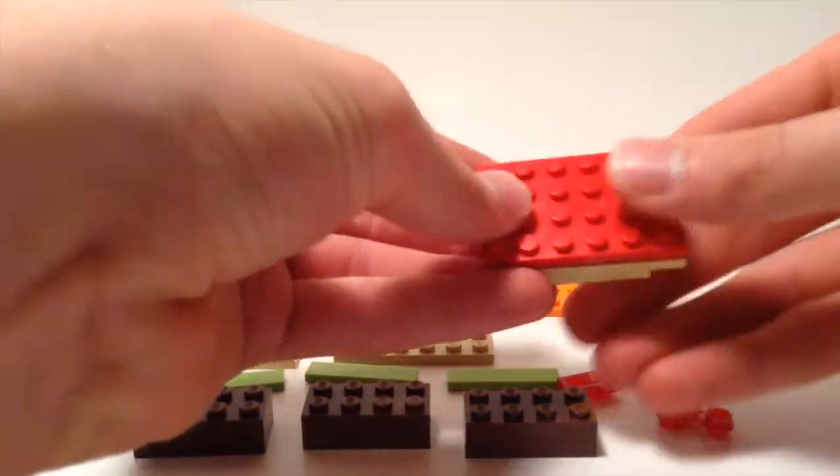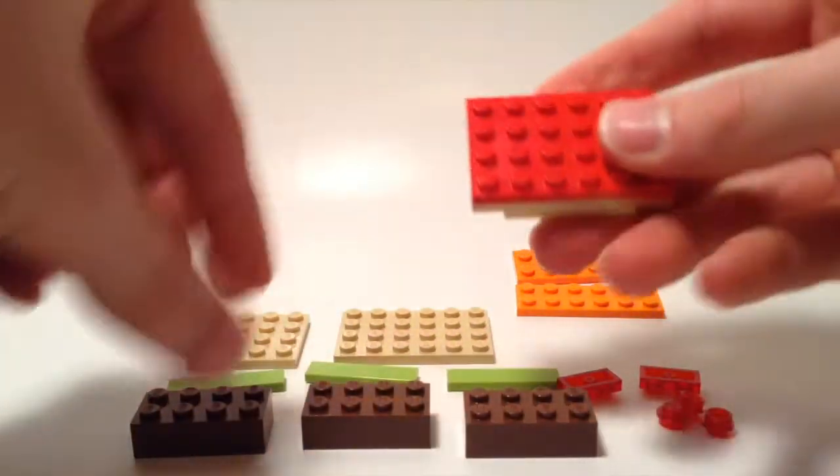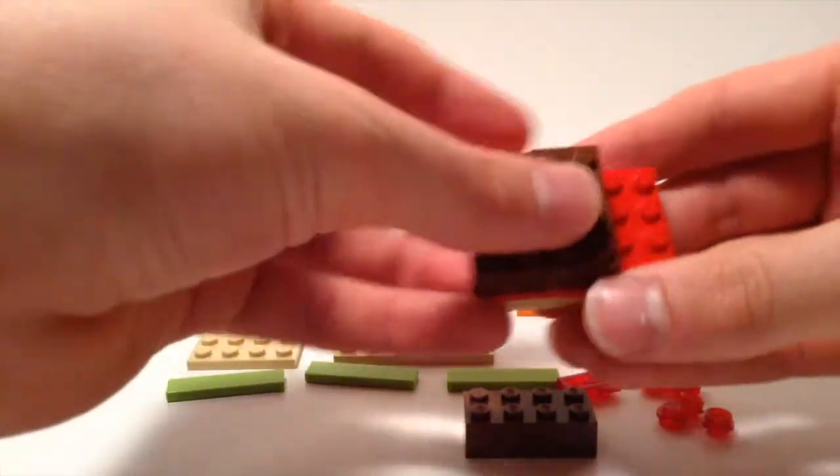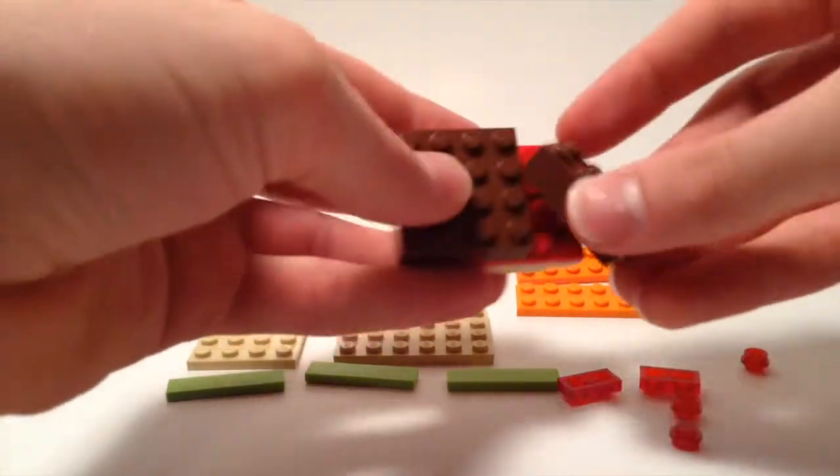Next you're going to put on this red plate to be the tomato. Then you'll put on these brown pieces to resemble the hamburger.